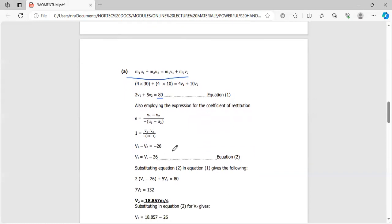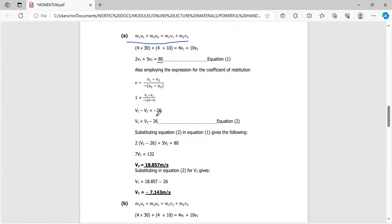We go back to the coefficient of restitution: E equals (V1 minus V2) over (U1 minus U2), which is (V1 minus V2) over negative (U1 minus U2). 30 minus 4 gives 26, with a negative outside giving negative 26. Cross multiplying gives V1 minus V2 equals negative 26. We can simplify to V1 equals V2 minus 26. That's equation 2.